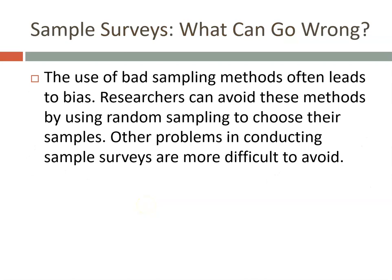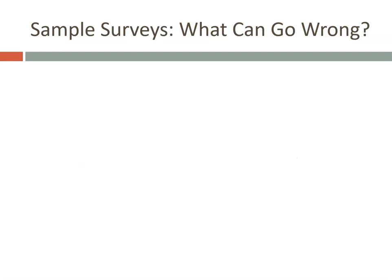The use of bad sampling methods often leads to bias. Researchers can avoid these by using random sampling, but there are other problems in conducting sample surveys that are more difficult to avoid. Sometimes it's the fault of the people conducting the sampling; other times, they did everything right and things can still go wrong.